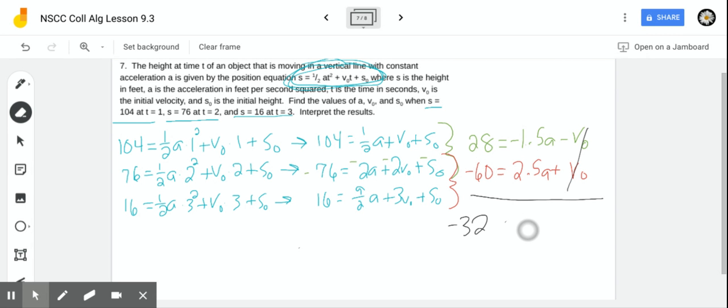Now, remember, that's acceleration. They told us the units. A is negative 32 feet per second squared. And now we need to back substitute so that we can find the velocity and the initial height. So we need to go back to one of these starred equations. It doesn't matter which one. I'm going to pick this one. So we have negative 60 equals 2.5 times negative 32 plus the initial velocity.